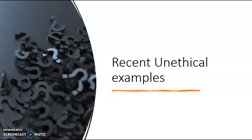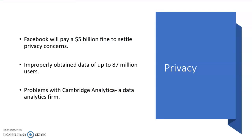Here are recent unethical examples. Starting off with privacy — Facebook, for example, a huge company that many people use, will have to pay a $5 billion fine to settle privacy concerns. Facebook had been partnered with Cambridge Analytica, a data analytics firm. Basically, this company was working with Facebook to obtain data of up to 87 million users — a big chunk of the population. This could be very dangerous for the population, hacking into the privacy of the average everyday person.